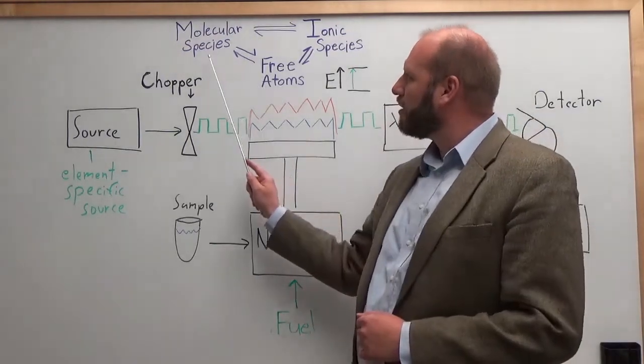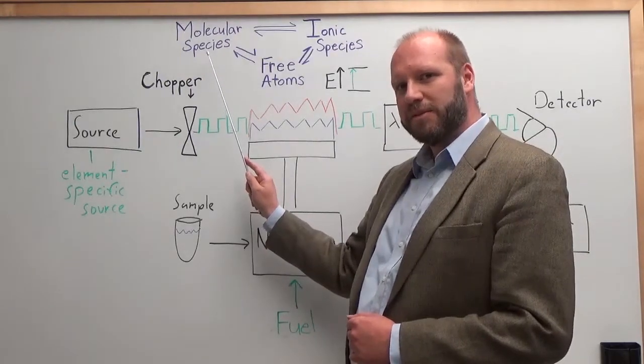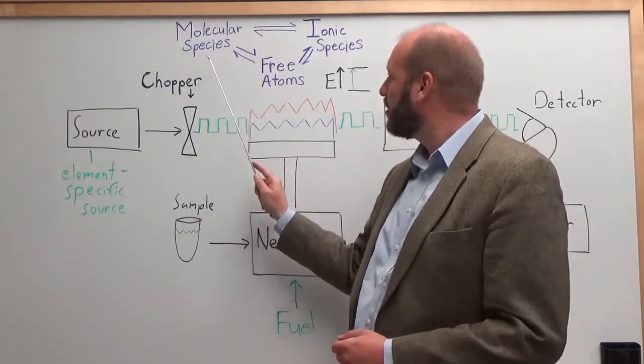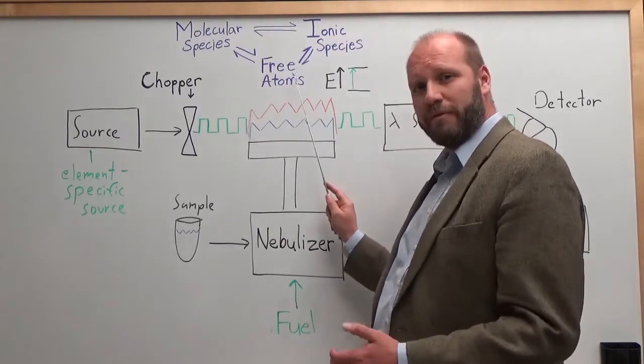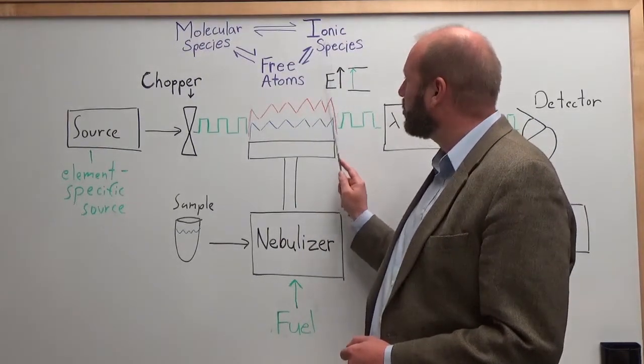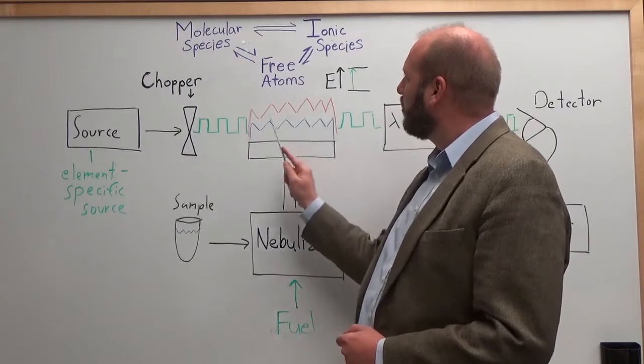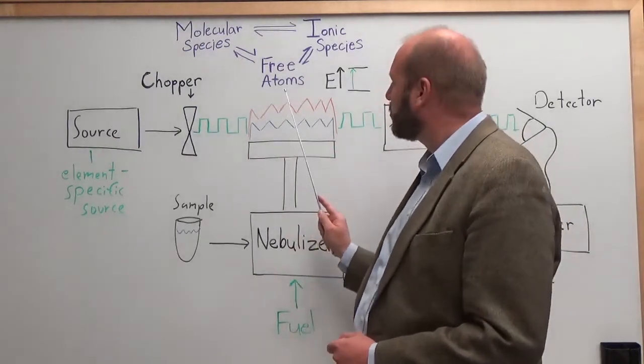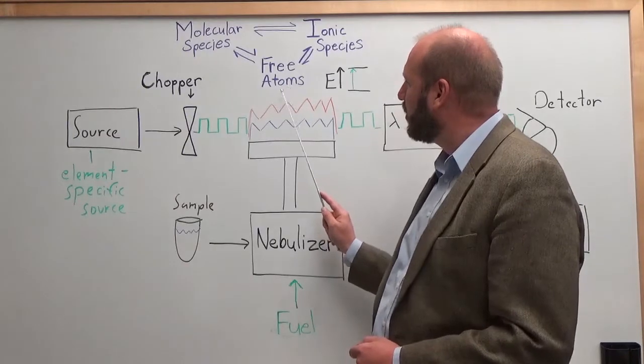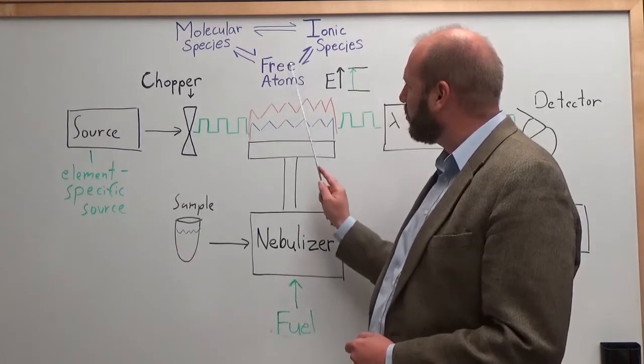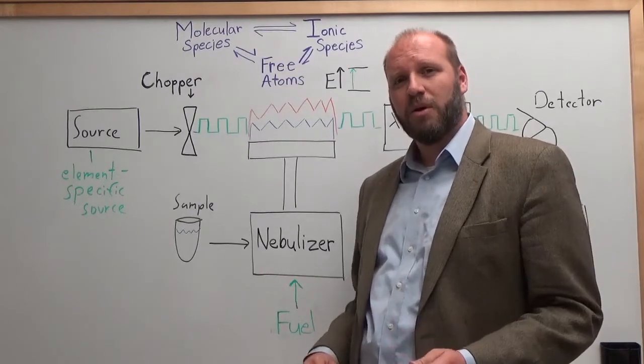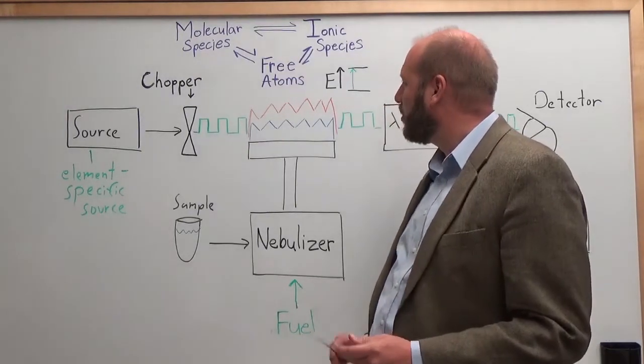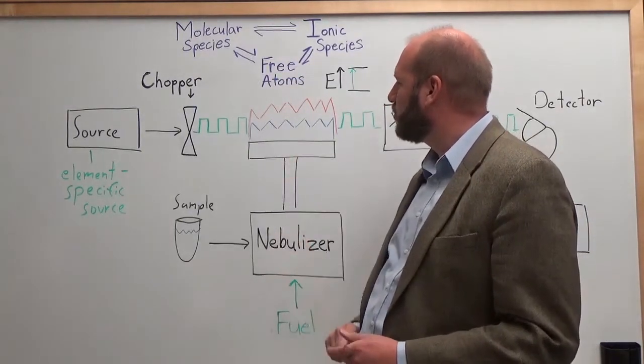However, our atoms can react with other compounds in the flame to give us molecular species. These might absorb differently. Likewise, our atoms can be ionized, removal of electron to form ionic species, which also will have a different absorption profile. Both of these elements are sources of error and you want to minimize or control them in a way that you can. So, we want our elements to be free atoms so that we can measure them. Typically, flame temperature or flame additives is what you can use to control the equilibrium between these compounds.